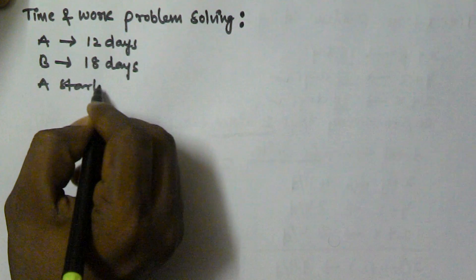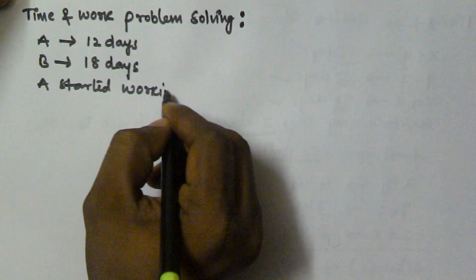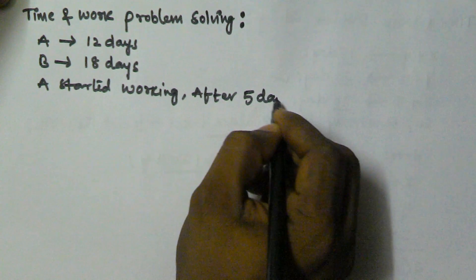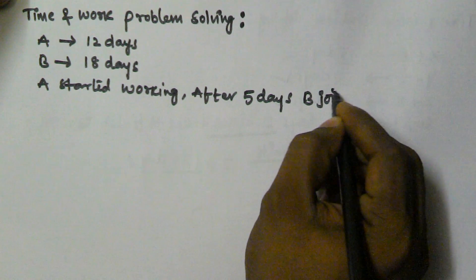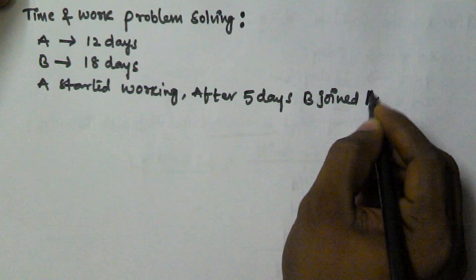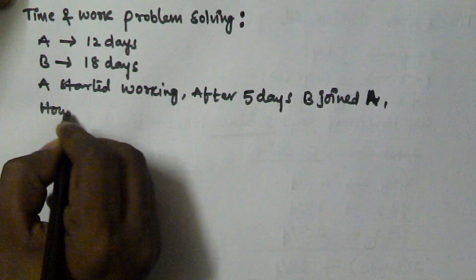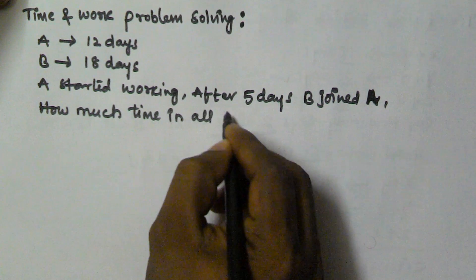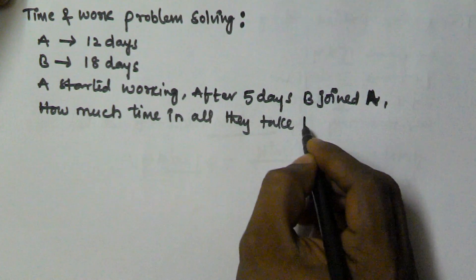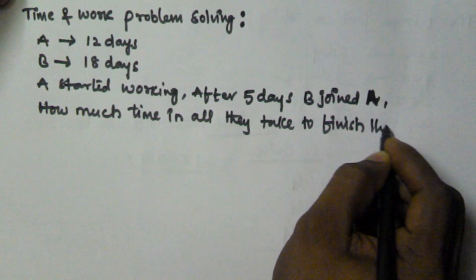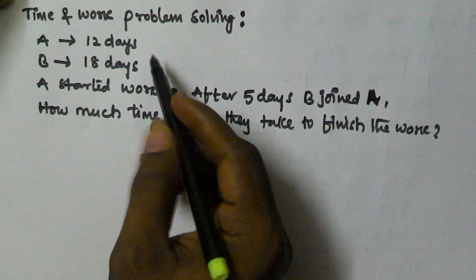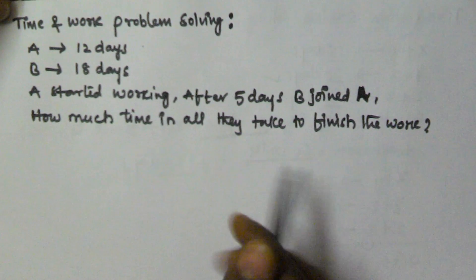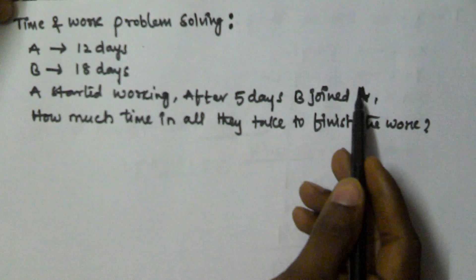A started working, and after five days B joined A. So how much time in all do they take to finish the work? A takes 12 days to finish the work and B takes 18 days to finish the work.